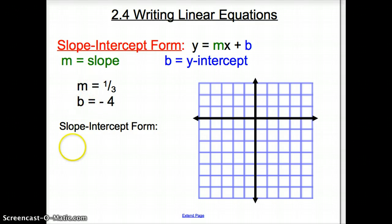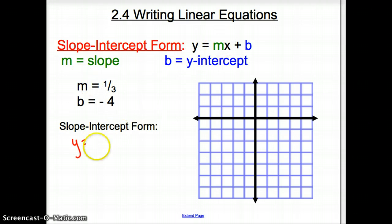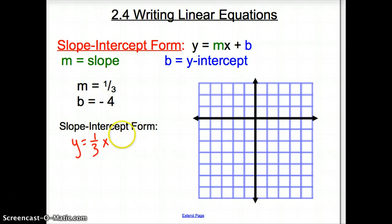We have y equals, and m is one-third, so that one-third goes in for m: y = (1/3)x, and then we subtract 4, giving us y = (1/3)x minus 4. Now let's go ahead and graph this.